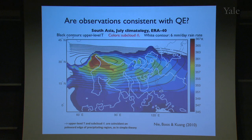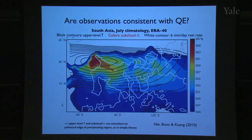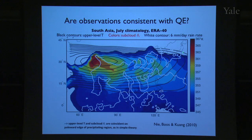Here you can see upper tropospheric temperature in black lines, and boundary layer θE in colors. The thin black lines are coastlines — this is India, the Horn of Africa, the Maritime Continent, and Japan up toward the top. The point of this plot is that boundary layer θE has a maximum located almost directly under the free tropospheric temperature maximum.